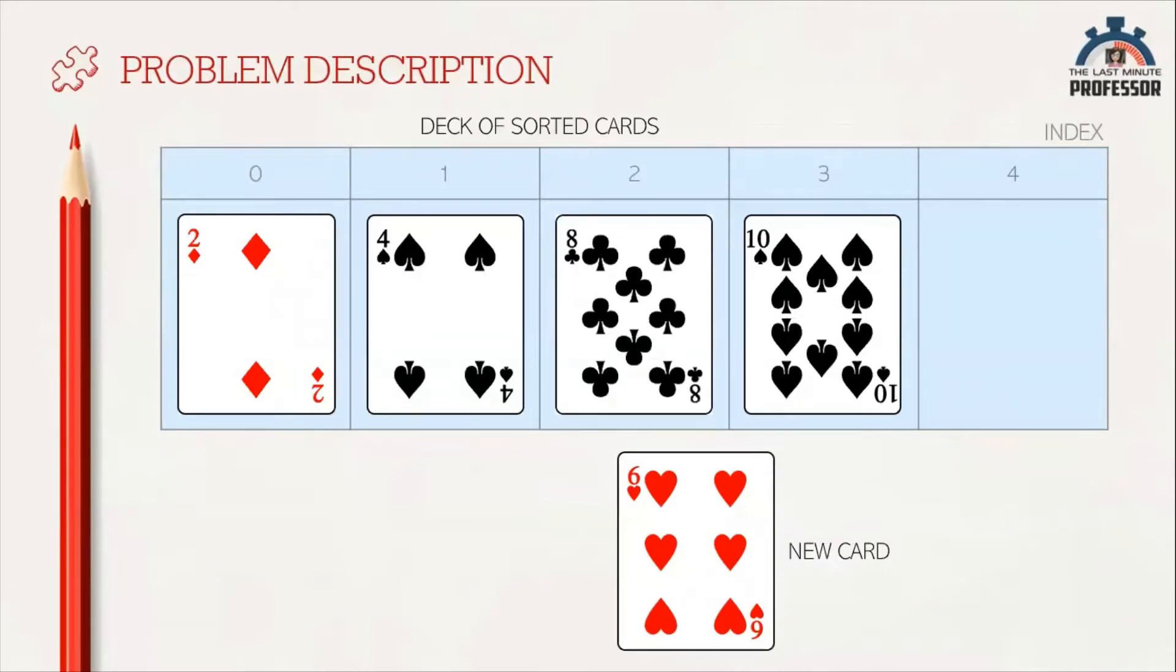Our strategy is to look at the set of arranged cards from the right end one by one, comparing the value of the arranged card with the value of the new card to be inserted. Stop at the first location where the value of the arranged card is less than the new card's value. To the immediate right of that location, insert the new card.